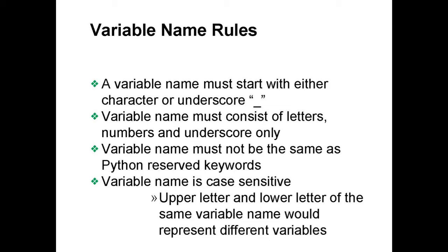When you declare a new variable you can choose almost any name you want, but there are some limitations. A variable must start with either a letter or an underscore — so you can start with any character from A to Z or with an underscore. The variable name must consist of letters, numbers, and underscores only; you cannot use punctuation. Variable names must not be the same as a Python reserved word.